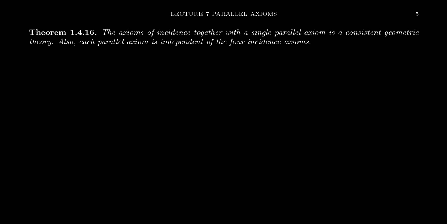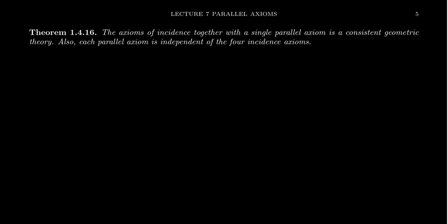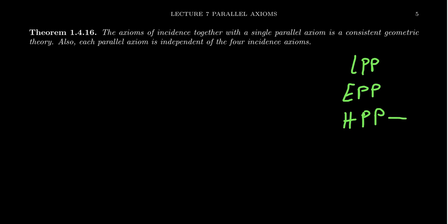In a previous video, we introduced the idea of the three parallel alternatives. We had LPP, the elliptic parallel postulate; EPP, the Euclidean parallel postulate; and HPP, the hyperbolic parallel postulate. The elliptic parallel postulate says there are no parallel lines. The Euclidean parallel postulate says parallel lines exist and are unique. The hyperbolic parallel postulate says parallel lines exist and there is more than one.